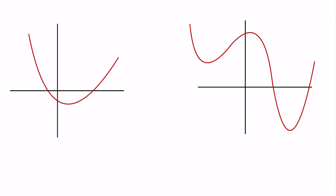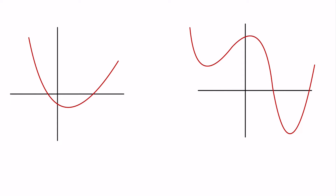Today I want to talk about an interesting topic that came up from a friend of mine. My friend asked an interesting question about functions that are convex — they always have this cup shape going upward. On the left we have a function that's convex, and here we have a function that's not convex.